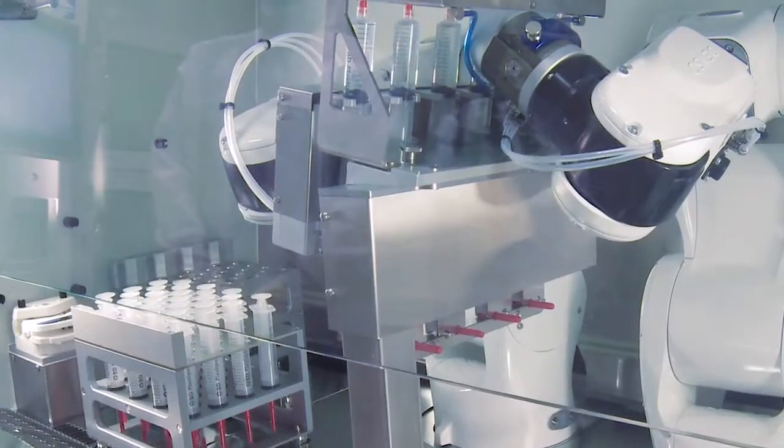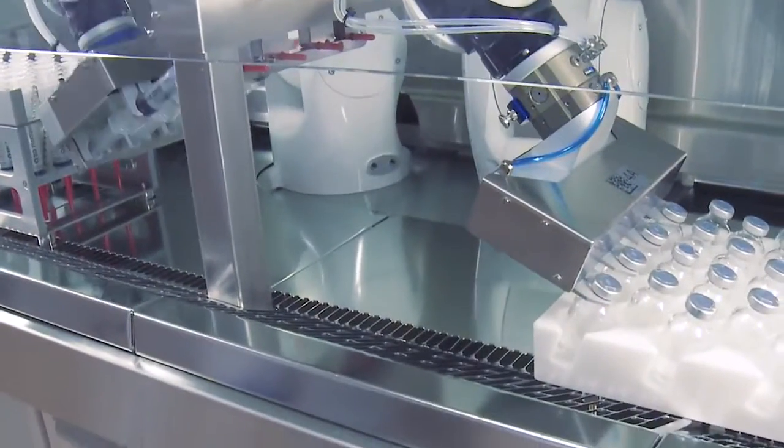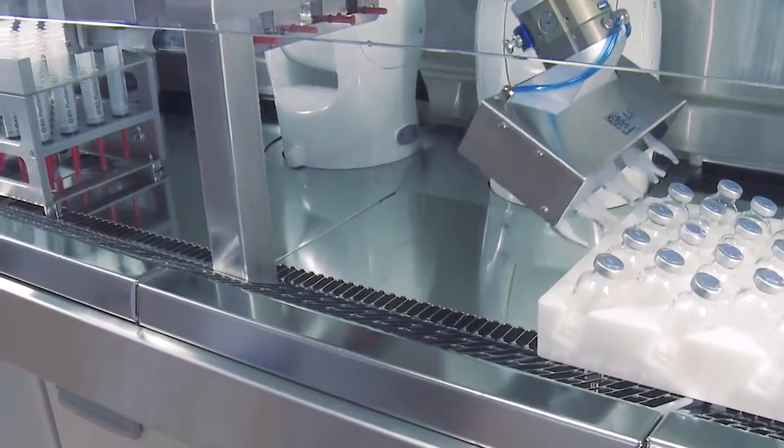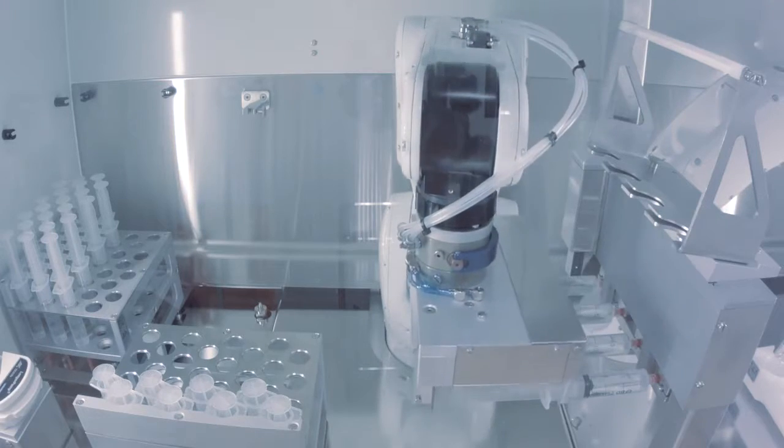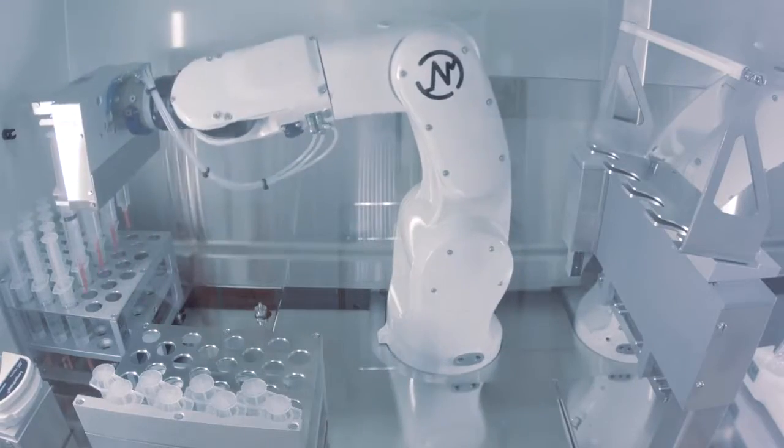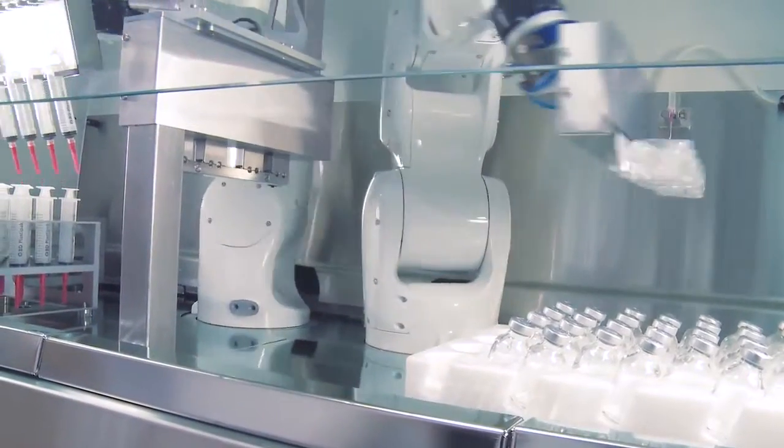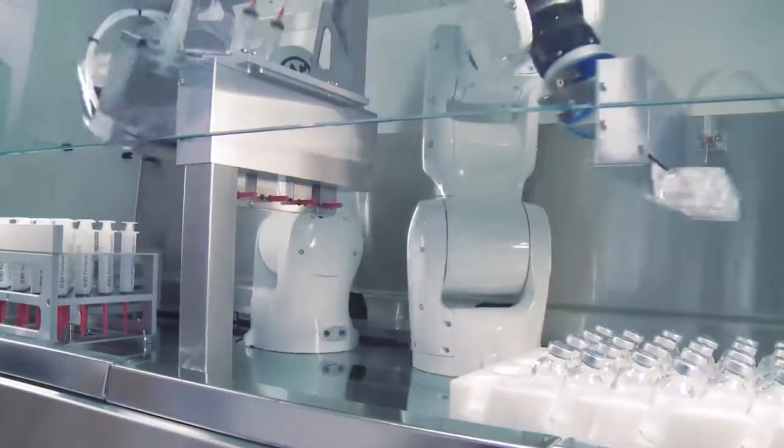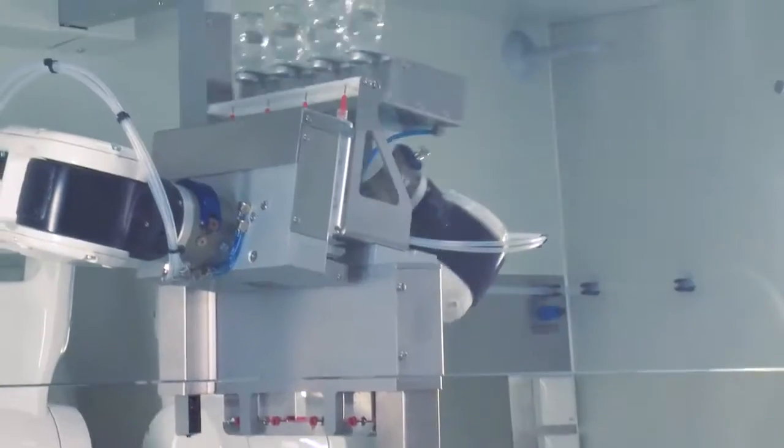The dose vials are returned to their original places on the tray. The syringes are placed back in the syringe rack. The robots repeat the same steps for each dose vial and syringe set in the program.